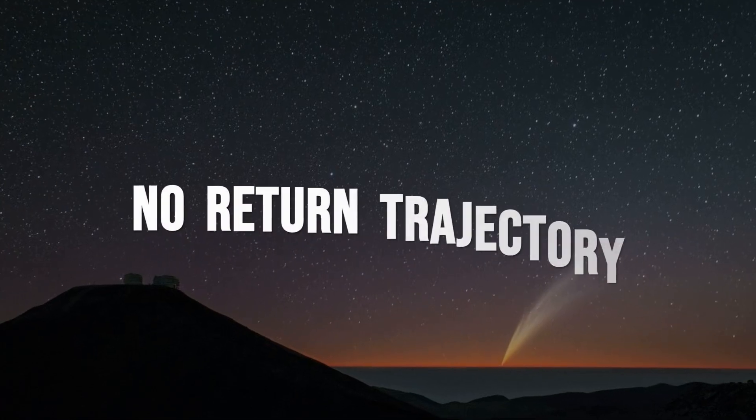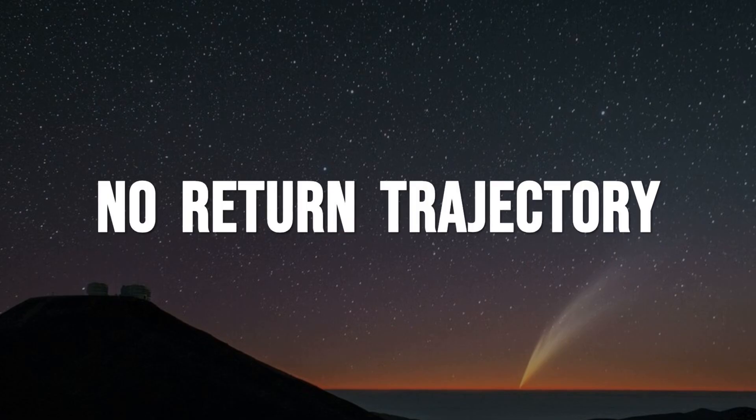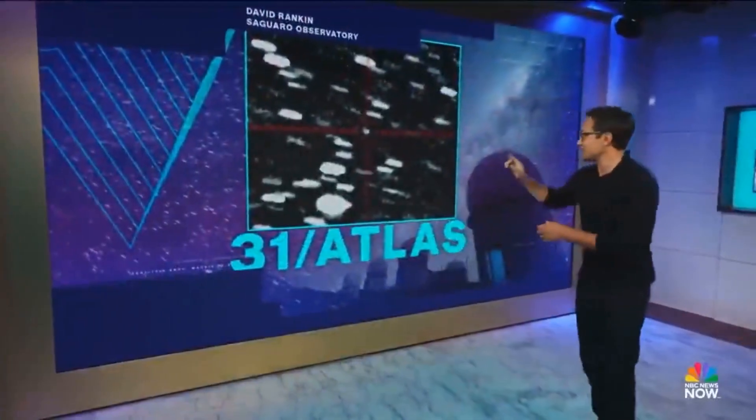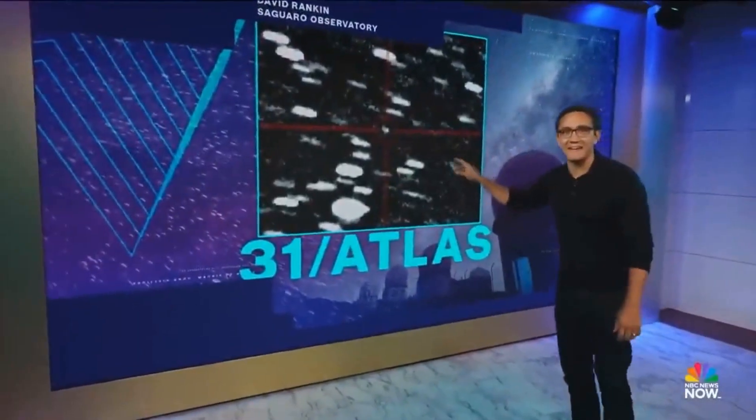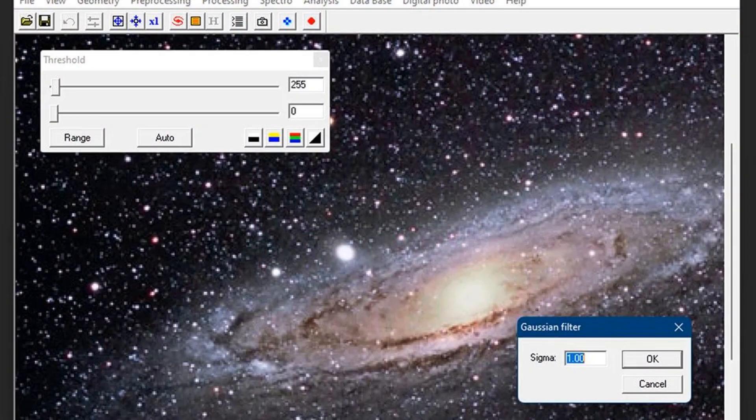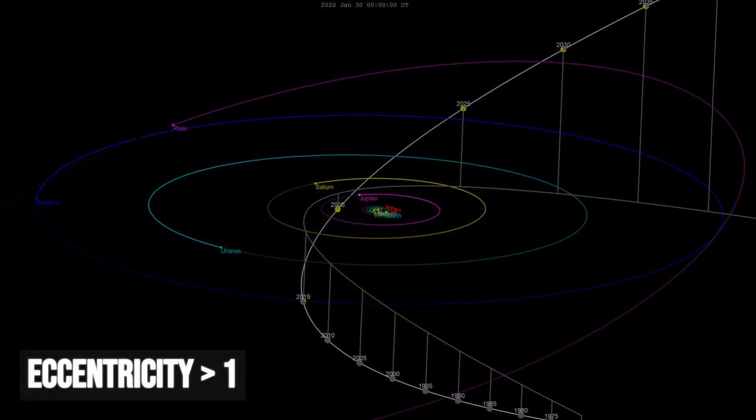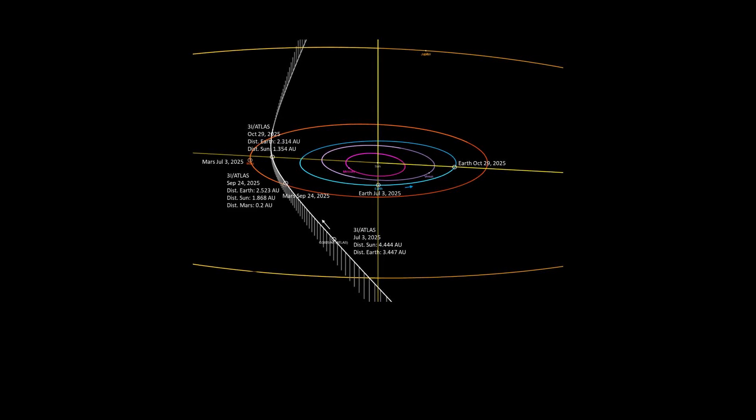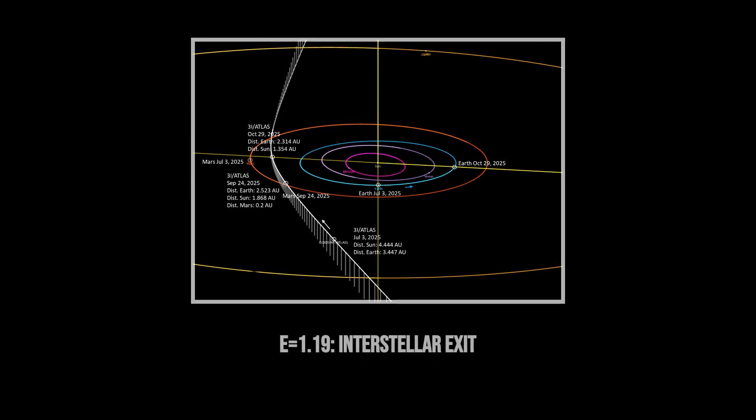When the Atlas survey in Chile flagged a fast-moving object in July 2025, the first orbital calculations sent a ripple through the team. The numbers didn't belong to anything local. Eccentricity greater than 1, well above the threshold for a solar system body, meant this object wasn't coming back. Its path is hyperbolic, the mathematical signature of an interstellar traveler.